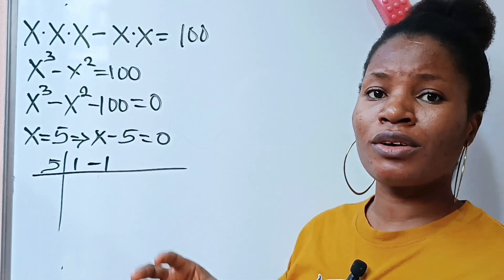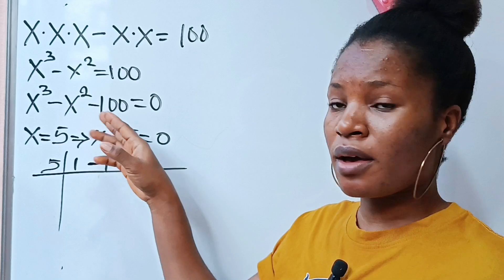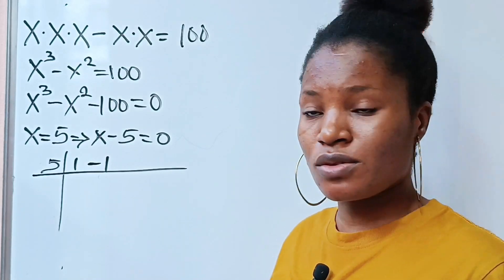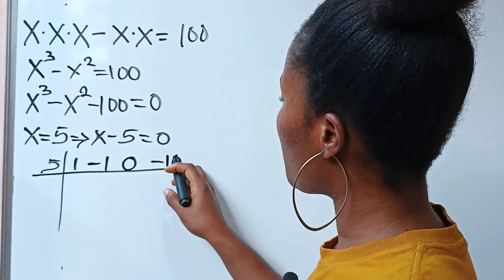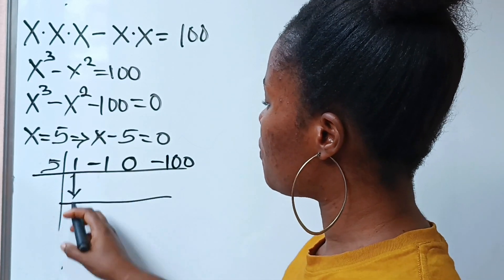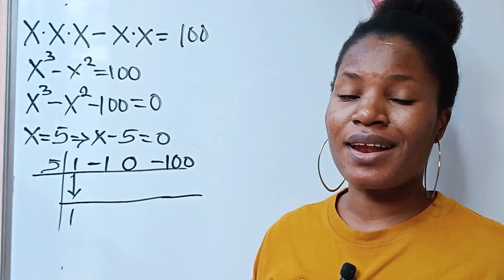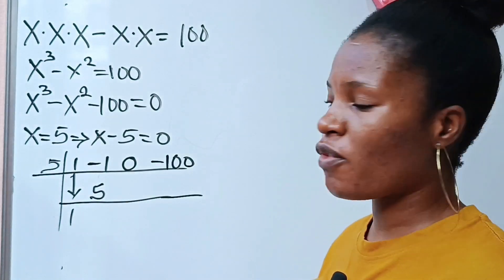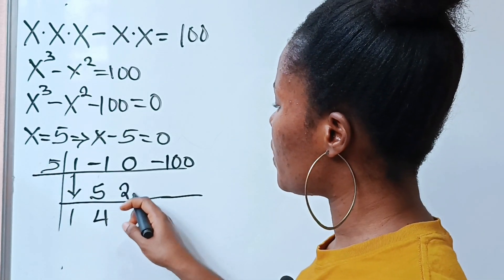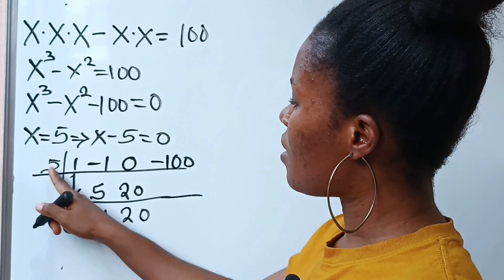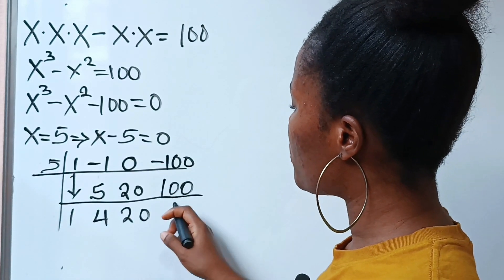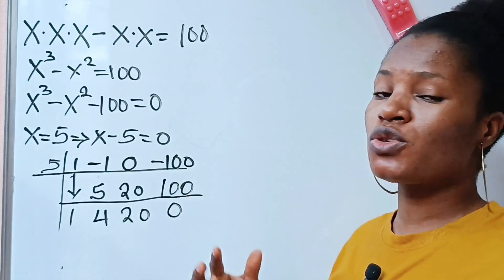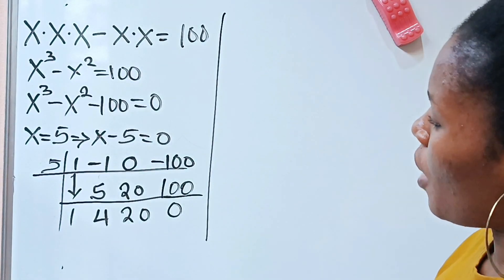If you look at this very closely, you'll notice that we don't have an x term, and x is supposed to be here before our constant. Since x is not there, that simply means we have 0 as the coefficient of x. So we have 0 representing x, then we have minus 100. The first thing we do is bring down the first number, which is 1, then multiply and add: 5 times 1 gives us 5; minus 1 plus 5 gives us 4; 5 times 4 gives us 20; 0 plus 20 gives us 20; 5 times 20 gives us 100; and minus 100 plus 100 gives us 0.